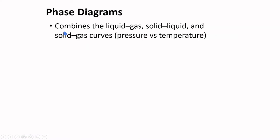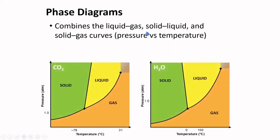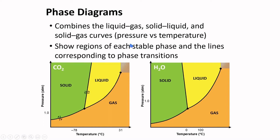Phase diagrams combine liquid gas, solid liquid, and solid gas curves, and this is a graph of pressure versus temperature. It shows regions of each stable phase and the lines corresponding to phase transitions.